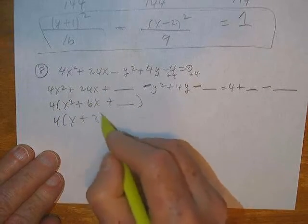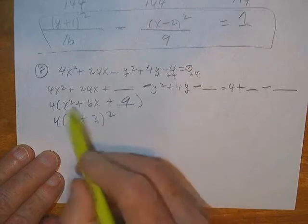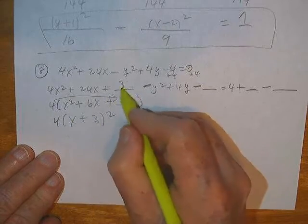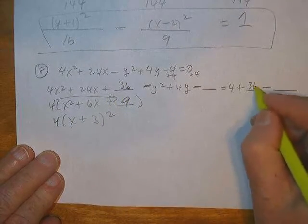Let's see. Half of 6 is 3. 3 squared, 9. 4 times 9. 36 on both sides.